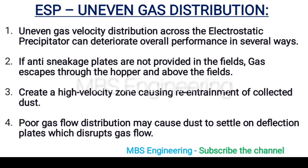Now we understand what are the problems faced if there is uneven gas distribution in the electrostatic precipitator. Point 1: Uneven gas velocity distribution across the electrostatic precipitator can deteriorate overall performance in several ways. Point 2: If anti-sneakage plates are not provided in the fields, gas escapes through the hopper and above the fields. Point 3: This creates a high velocity zone causing re-entrainment of collected dust. Point 4: Poor gas flow distribution may cause dust to settle on deflection plates, which disrupts gas flow.